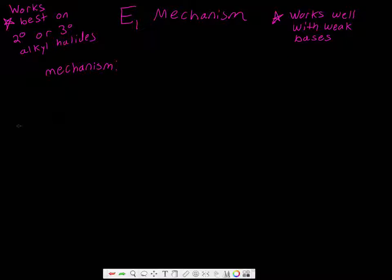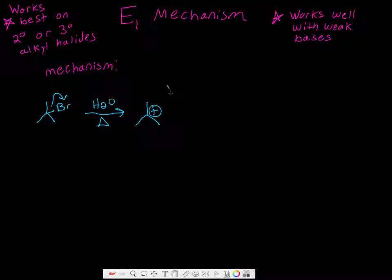Let's do a simple problem. We'll take a tertiary alkyl halide, react it with water — our weak base — and heat. The first thing that happens, just like in SN1, is our leaving group leaves, giving us a carbocation, and Br⁻ is floating around in solution. The carbon where our leaving group left is our alpha carbon, and the carbons directly connected to it are our beta carbons.